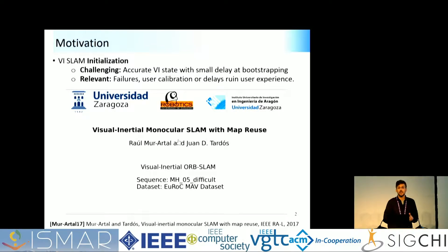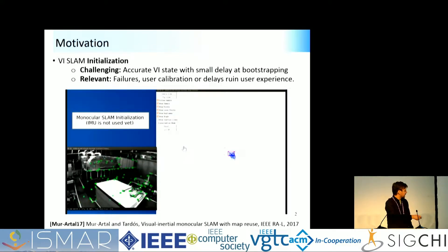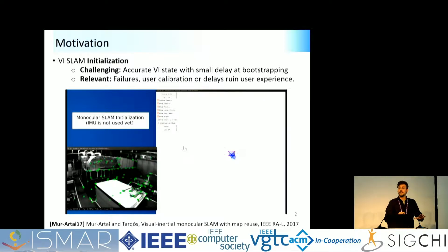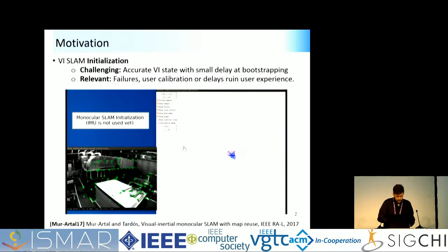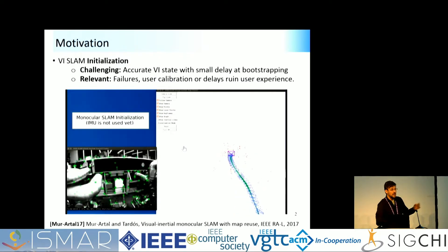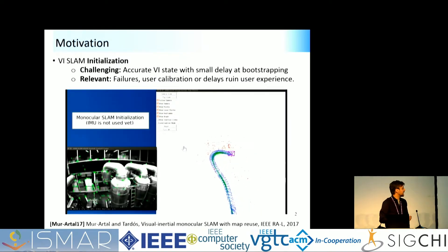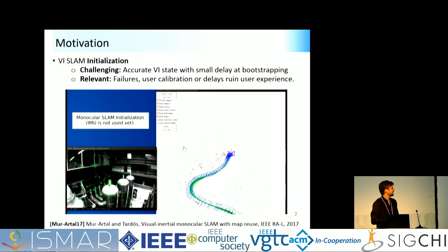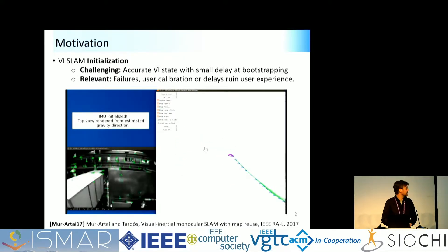I want to show you a video of one of the state-of-the-art visual-inertial tracking systems to show how initialization is a problem. You are seeing the image taken by a quadrotor, with the estimation shown and text indicating initialization has not happened yet. In this system, initialization goes in two stages: first only the camera is used, then the IMU also contributes. It takes quite a long time — around 10 seconds — to be fully initialized.